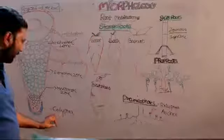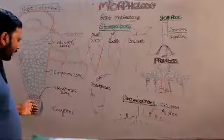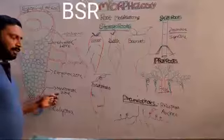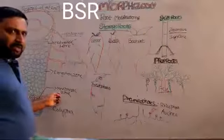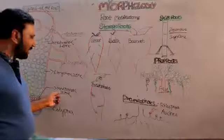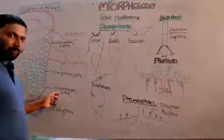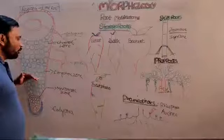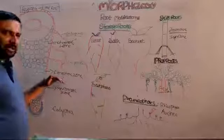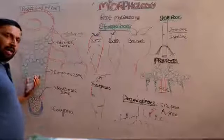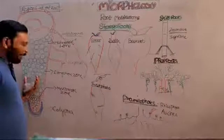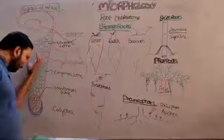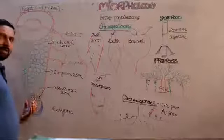Above the calyptra there is a meristematic zone in which meristematic cells are present which can divide repeatedly. Above the meristematic zone there is an elongation zone in which the cells undergo elongation, helpful for vertical growth of the root.